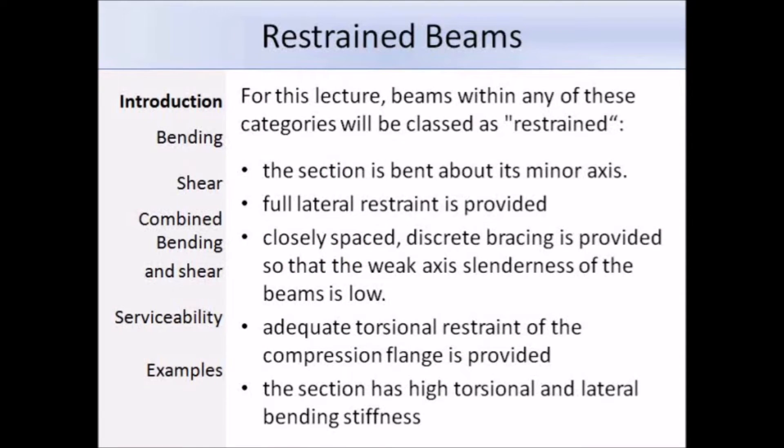Since this presentation is specifically for restrained beams, we have this list of categories, and if a beam meets any of these criteria then it can be classed as restrained. Note that when designing an unrestrained beam you need to refer to both this lecture and the one on unrestrained beams. Since LTB occurs about the major axis, it can be discounted when the section is bent about its minor axis. If full lateral restraint is provided or closely spaced discrete bracing is included, or if the compression flange is sufficiently restrained, then LTB can be discounted and the beam can be treated as restrained. Also sections with high torsional and lateral bending stiffness are unlikely to fail by LTB. For example, circular hollow sections or circular or square bars.